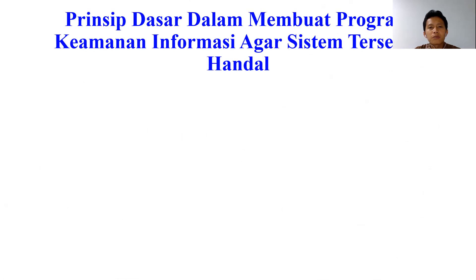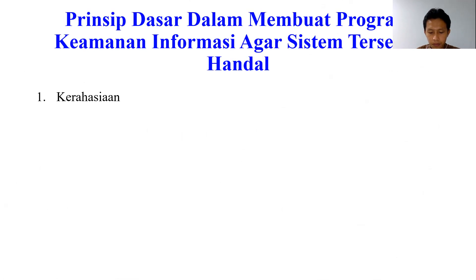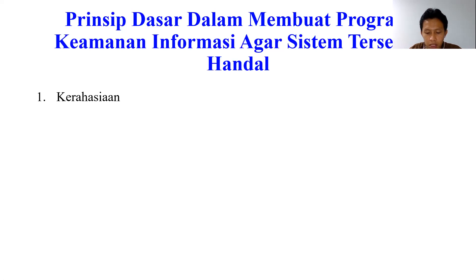Kemudian selanjutnya yaitu prinsip dasar dalam membuat program keamanan informasi agar sistem tersebut handal. Yang pertama yaitu kerahasiaan. Kerahasiaan artinya informasi dijamin hanya tersedia bagi orang yang berwenang sehingga pihak yang tidak berhak tidak bisa mengakses informasi. Contoh kerahasiaan adalah seorang administrator tidak boleh membuka atau membaca email milik pengguna. Kerahasiaan harus menjamin data yang harus dilindungi pengguna dan penyebarannya, baik oleh pengguna maupun administrator.